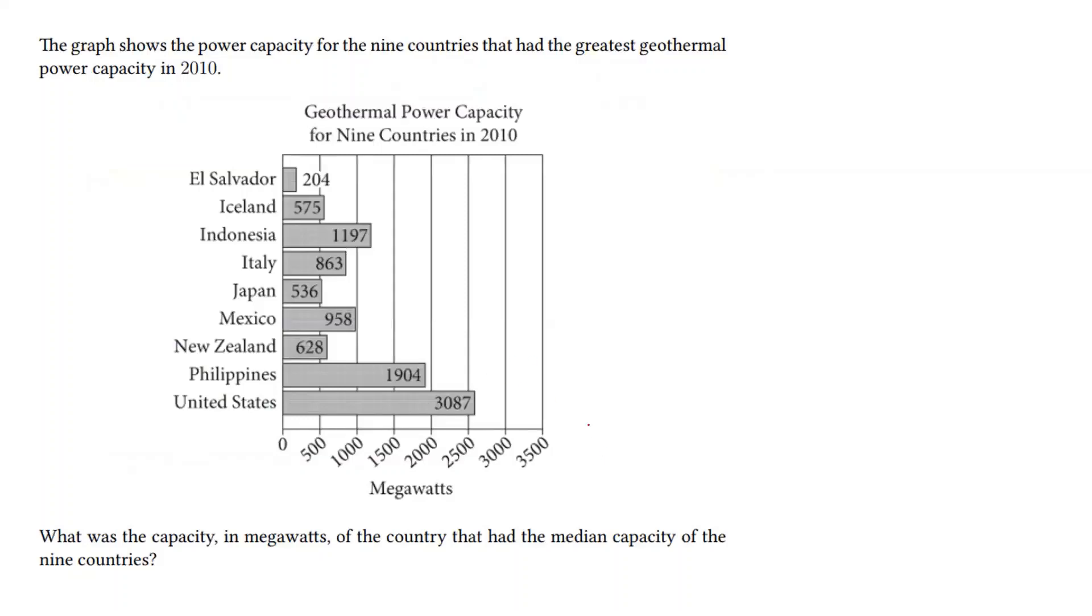Here we are interested in median once more. We have fewer data points, we only have 9 this time, and so that means the center data point is going to be the 5th data point. We can order this in increasing order, starting with El Salvador is the smallest, next smallest is going to be Japan, third smallest Iceland, fourth smallest New Zealand, and the fifth smallest is going to be Italy. And that's what we're interested in. We're interested in the 5th when ordered, so 863 is the number we're interested in.